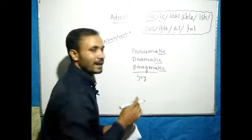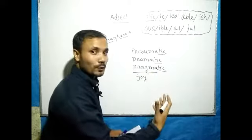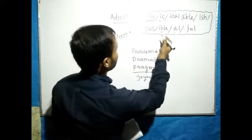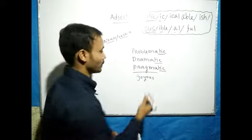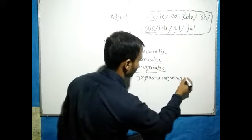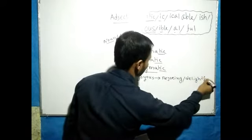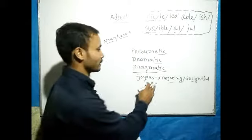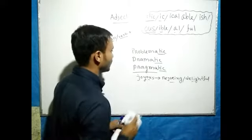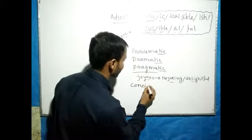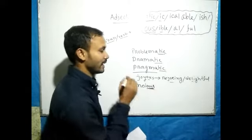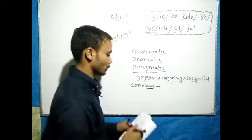Joy means 'happiness.' When there is happiness, when happiness is lost — the opposite of happiness in English is 'disjoying,' meaning the loss of happiness. Then there is 'delight,' which also means happiness. Then comes the adjective — 'conscious' means aware or conscious. So we see how these adjectives and their meanings are built.